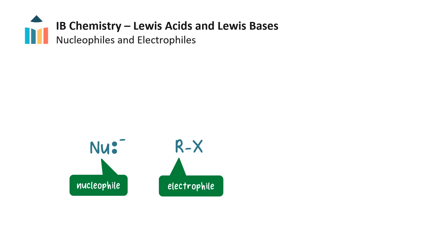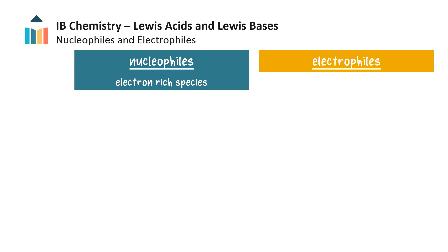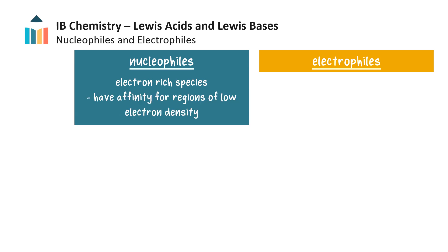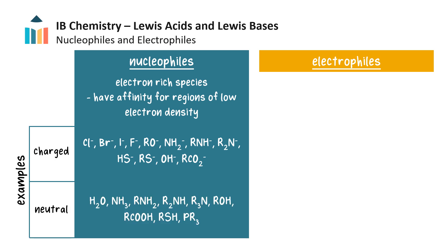Electrophiles are often represented as E+. Nucleophiles are electron-rich species that can donate a pair of electrons, and they have an affinity for regions of low electron density. There are many types of nucleophiles — some are negatively charged and some are neutral — but they all possess a lone pair of electrons or a pi bond, which they can donate to an electron-deficient species or electrophile.